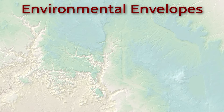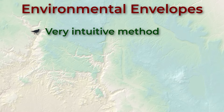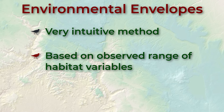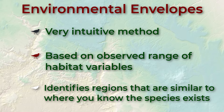Now let's start with environmental envelopes. The name sounds complicated but it's really one of the most basic and intuitive methods you could think of. There are many variations on the method, but basically the goal is to identify all areas of the landscape that fall within some range of values along one or more variables. Most variations are conceptually similar to the basic approach except they use more complex statistical descriptors than just the range of observed values. But we're going to go with the simplest method, and there's nothing wrong with it — it's a pretty defensible way to identify habitat.